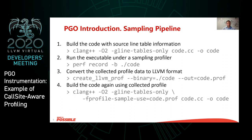Let's start from the PGO introduction — the sampling pipeline. We first need to collect information about program execution. We have some source code of the program, we compile it, and then we run the program under some sampling profiler. For example, in this case we run perf and use record to collect information using the sampling approach. Then we process the result of profiling using the create LLVM prof tool, which is an additional tool that takes the result of perf and transforms it into a format that Clang will recognize.